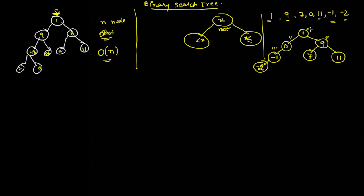Minus 2 is less than 1, less than 0, and less than -1, so it comes to the left of -1. This tree is called a binary search tree — for any node, data less than that node goes to the left side.